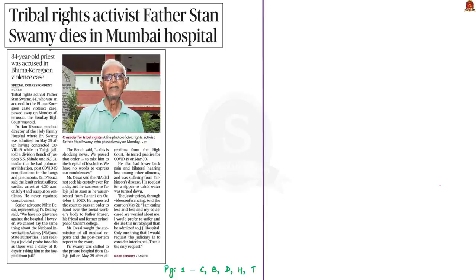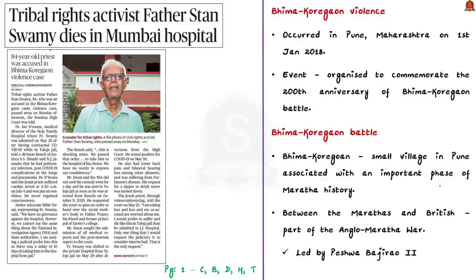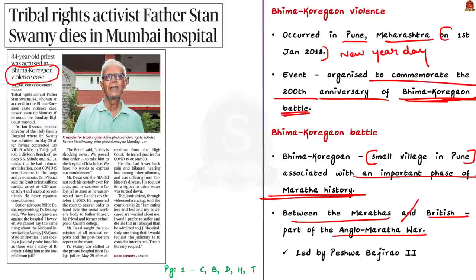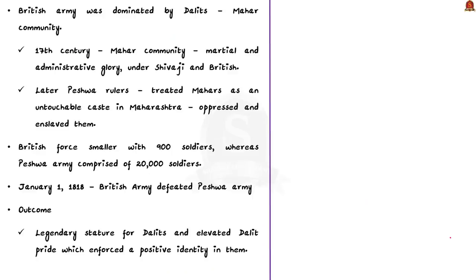The next news article discusses the demise of Father Stan Swamy, a tribal rights activist who fought for the rights of indigenous tribes or Adivasis in Jharkhand, and one of the prime accused in the Bhima Koregaon violence case. The Bhima Koregaon violence occurred in Pune district of Maharashtra on 1st January 2018, at an event organised to commemorate the 200th anniversary of the Bhima Koregaon battle. To understand the case, we need to know about this battle. Bhima Koregaon is a small village in Pune district associated with a battle between the Marathas and the British, which was part of the Anglo-Maratha war, led by Maratha king Peshwa Baji Rao II.